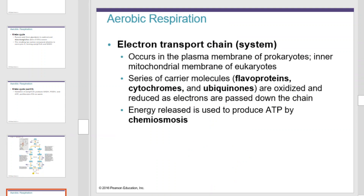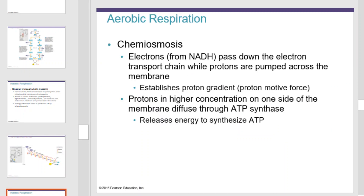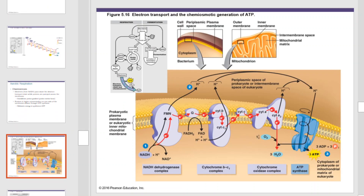The electron transport chain is the final step of aerobic respiration. It occurs in the plasma membrane of prokaryotes and the inner mitochondrial membrane of eukaryotes. It is made up of a series of carrier molecules: flavoproteins, cytochromes, and ubiquinones. These molecules are oxidized and reduced as electrons are passed down the chain. Energy is released and used to produce ATP by chemoosmosis. Electrons from NAD pass down the electron transport chain while protons are pumped across the membrane, establishing a proton gradient. Protons in higher concentration on one side of the membrane diffuse through ATP synthase, releasing energy to synthesize ATP.